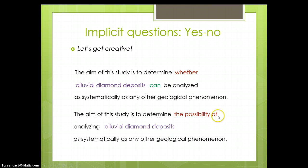Notice, by the way, the possibility of requires the gerund form of the verb there. So, the possibility of analyzing alluvial diamond deposits. And that's the end.